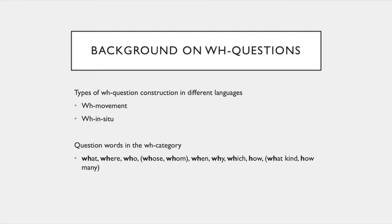For the background on WH questions, there are in general two types of WH question construction, with some exceptions and mixed versions, but usually it's either WH movement or WH in situ. Questions in this WH category are: what, where, who, sometimes whose and whom, when, why, which, and how — even though 'how' doesn't technically have WH. And sometimes also 'what kind', 'how many', something that doesn't have its own word in English or German, but some languages do.